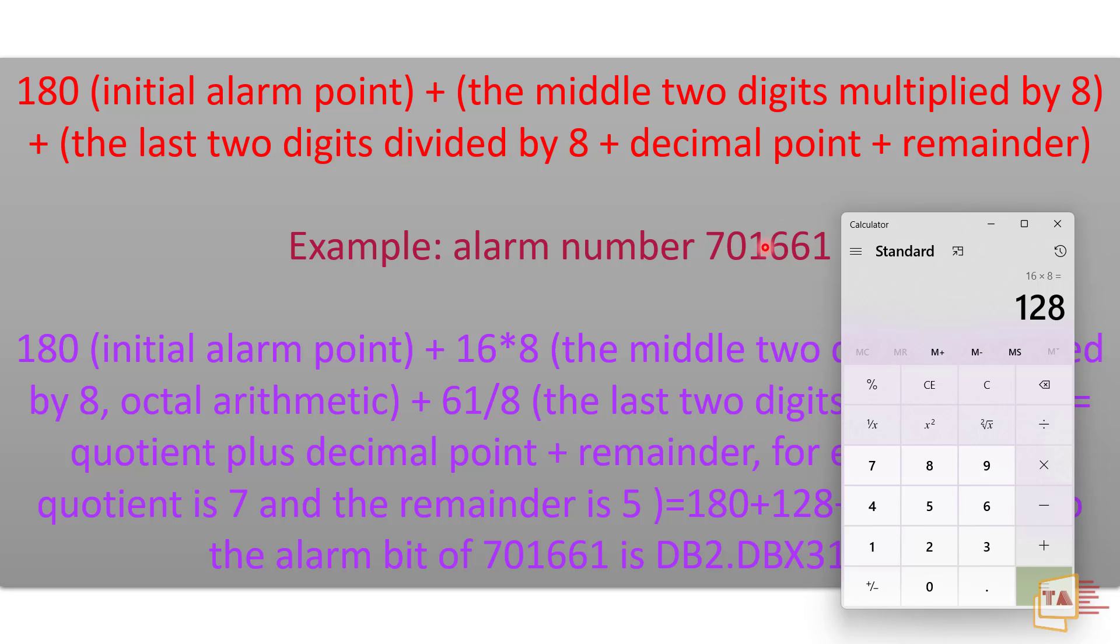We have 61. So I'm going to divide by 8. 61 divided by 8, we got 7. What is the remainder? 5. Because 7 times 8 is 56, so we have remainder 5.